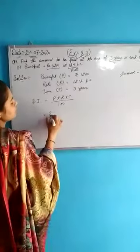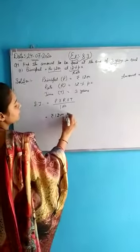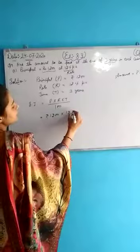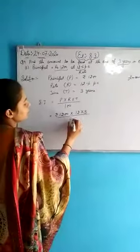That is, principal is rupees 1200, multiply rate is 12, and time is 3 years, divided by 100.